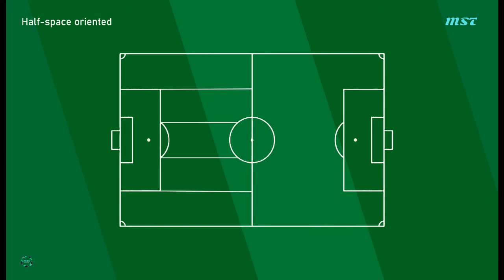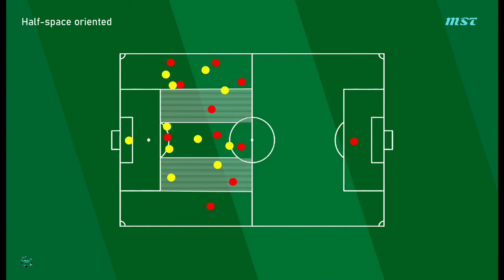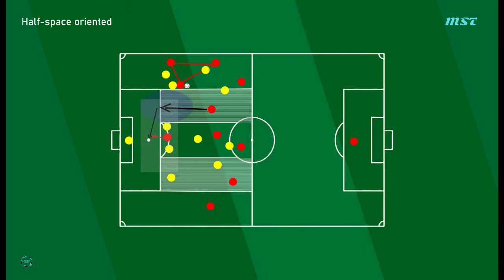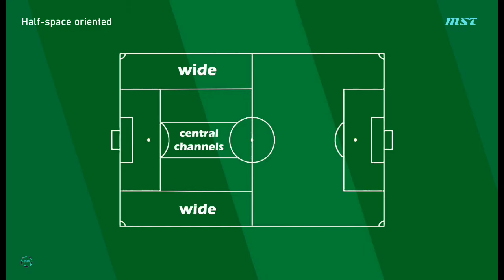The half space is located between the touchline and an imaginary line drawn from the edge of the penalty box and central circle. Teams often utilize players who are skilled at positioning themselves in this space to receive passes, make runs, and create goal-scoring chances. This area provides a balance between central access and wide attacking options.